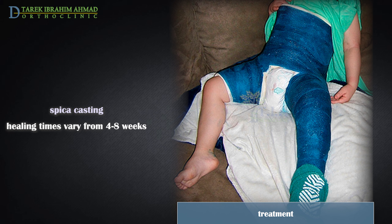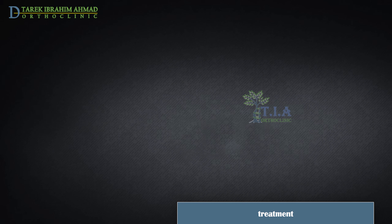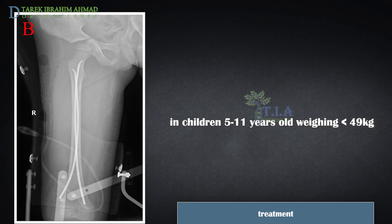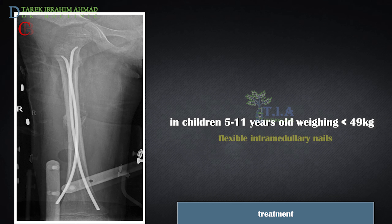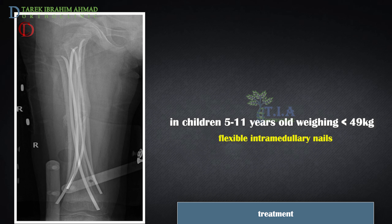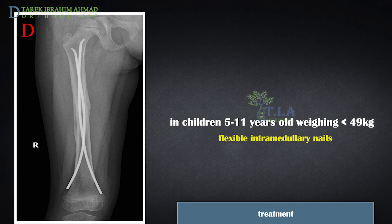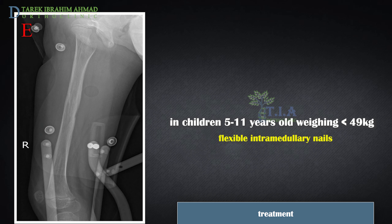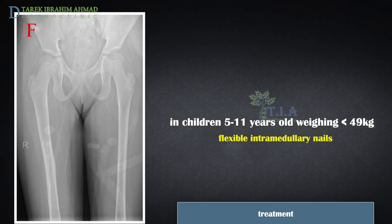Children remain in the spica cast for a period ranging from four to eight weeks. In children six to ten years of age, closed reduction and flexible intramedullary rod fixation are the treatments of choice in stable fracture patterns and in children weighing less than 50 kilograms.